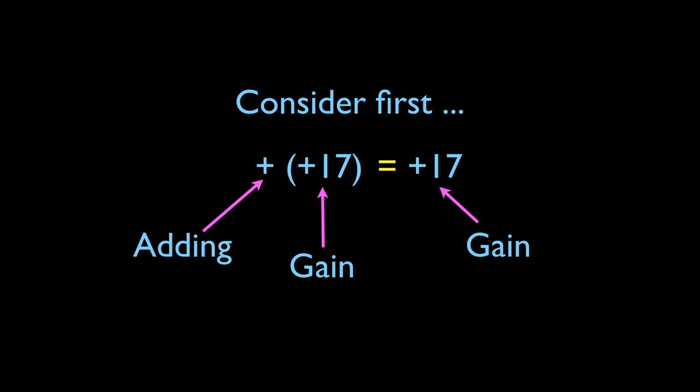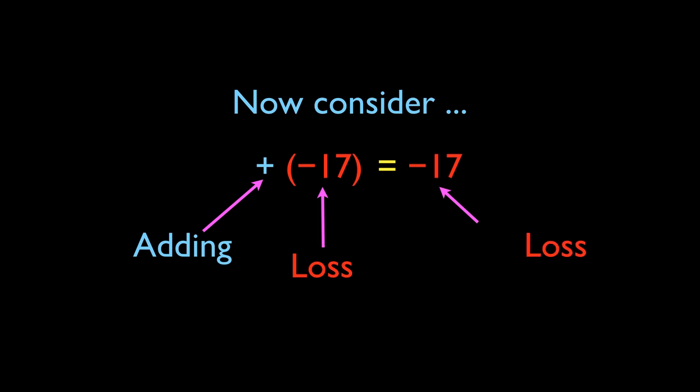Now consider adding a negative 17. The plus implies adding and the negative 17 implies a loss. I don't think there would be any debate if we were to add a loss of 17. For example, if you're a company and you add a loss of 17, that's equivalent to a loss of 17. All of this seems pretty obvious, but what I'm trying to get at is the fact that we can condense the two signs, the plus followed by the negative, into just a negative. Now we're ready to start talking about subtraction.